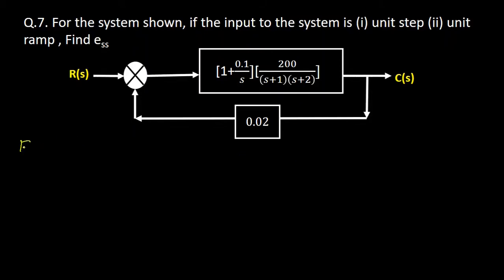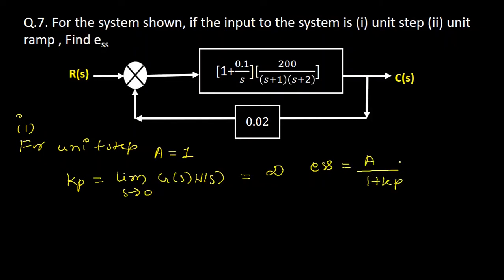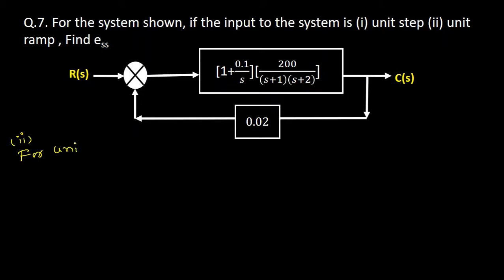For unit step, the magnitude a equals 1. When a unit step is given, the positional error coefficient Kp controls the error, and Kp equals the limit as s tends to 0 of G(s)H(s). Substituting equation one, we get Kp equal to infinity. Therefore, the steady state error ess equals a divided by (1 plus Kp) = 1 divided by (1 plus infinity), so the steady state error for unit step equals 0.